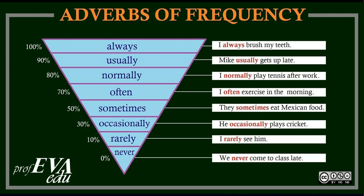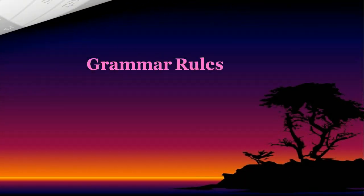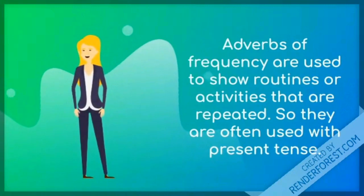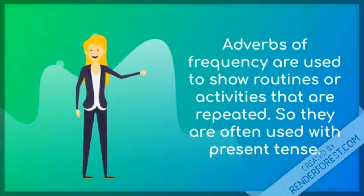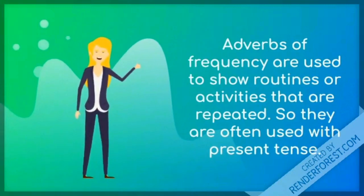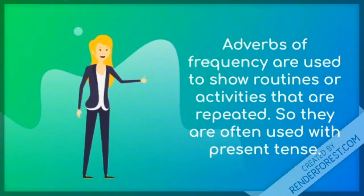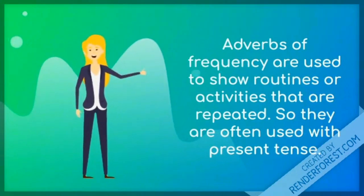'We never come to class late' — the adverb 'never' shows 0% frequency of action. Grammar rules: adverbs of frequency are used to show routines or activities that are repeated, so they are often used with the present tense.